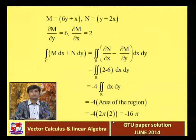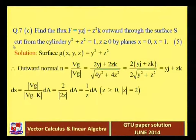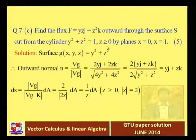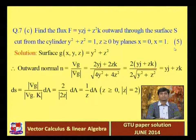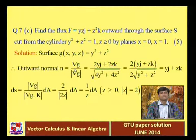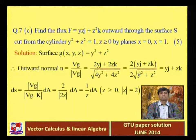The area of the circle (x-2)² + (y-3)² = 4 is π·r² = π·4 = 4π, so the answer is -4 × 4π = -16π. Next, Question 7c: find the flux of F = yz j + z²k outward through surface S cut from the cylinder y² + z² = 1, z ≥ 0, by x = 0 and x = 1. The outward normal n = (2yj + 2zk) / √(4y² + 4z²) = yj + zk.